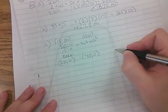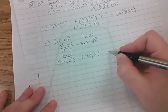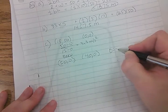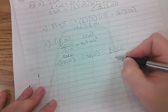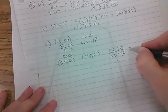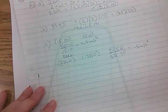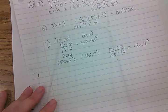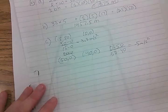So to get the slope, you end up with negative 5 meters per second squared.